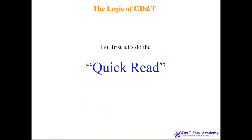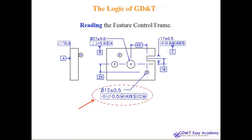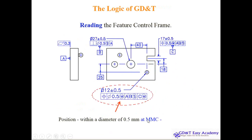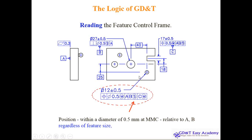We'll go through the feature control frame decoding. The particular symbol here means position, within a diameter of 0.5 mm. MMC — maximum material condition — is allowed for this position. Related to primary datum A, where 3 degrees of freedom are restricted; related to B, regardless of feature size (RFS).